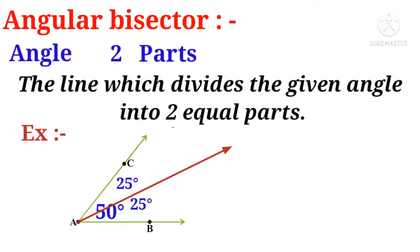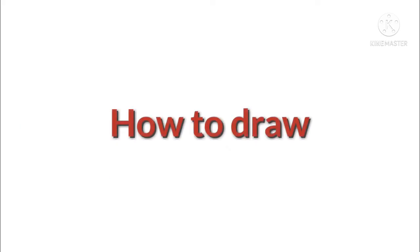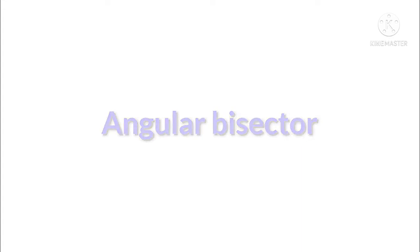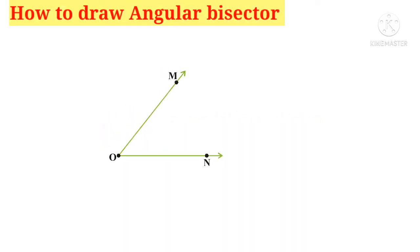How to draw an angular bisector? For this, let us take an angle. Take the compass, put the sharp end at the vertex O, and with some radius draw a circle. Observe that the circle is cutting the sides OM and ON of the angle in two different points.